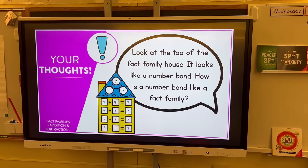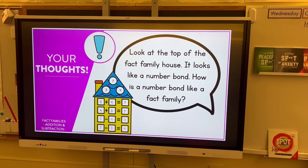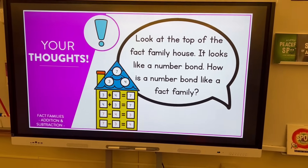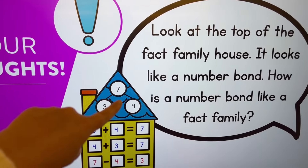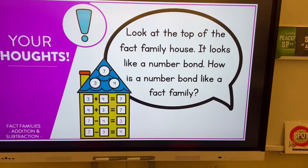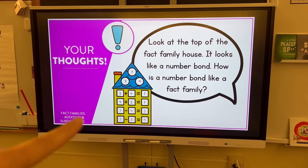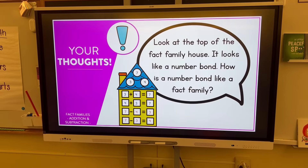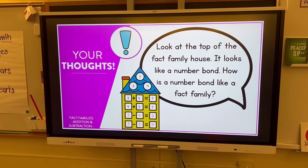For our final closing we always have a closing slide. It says: look at the top of the fact family house — it looks like a number bond. How is a number bond like a fact family? I really want them to focus on this because we talk a lot about part-part-whole and number bonds, and I want them to see how a fact family and a number bond are related.